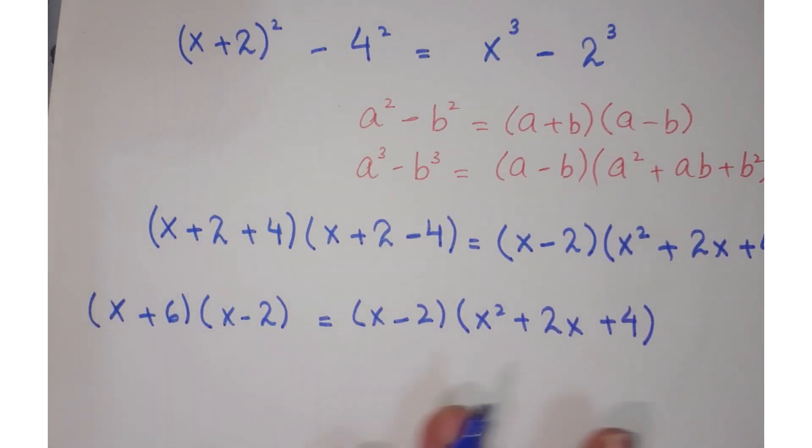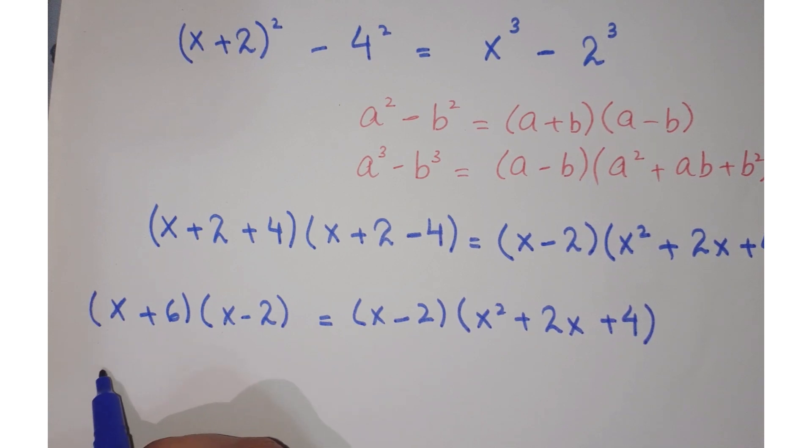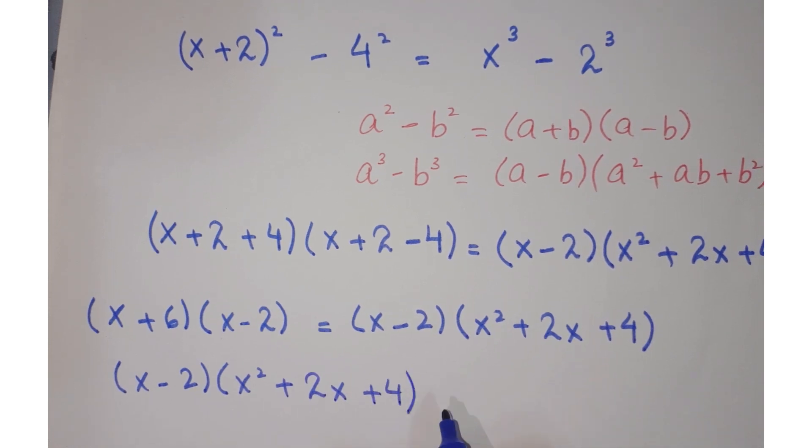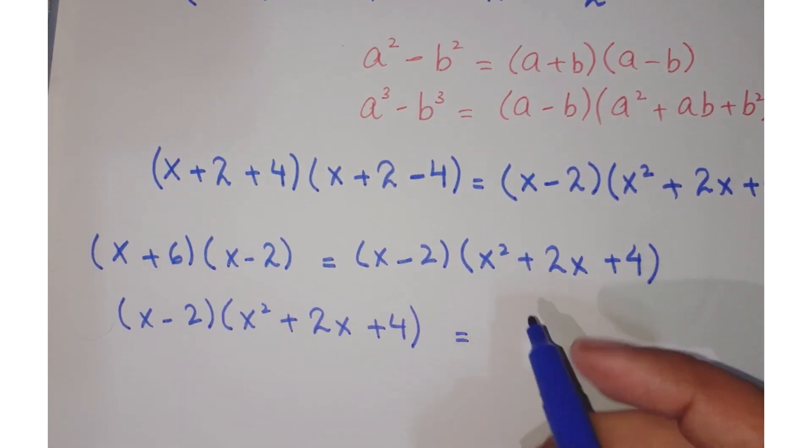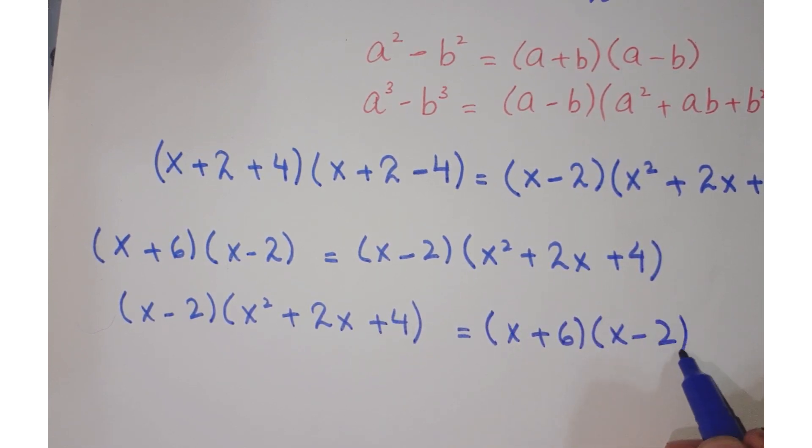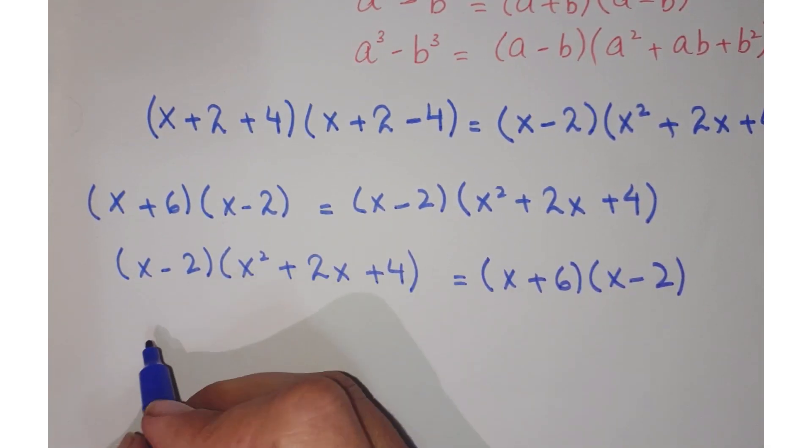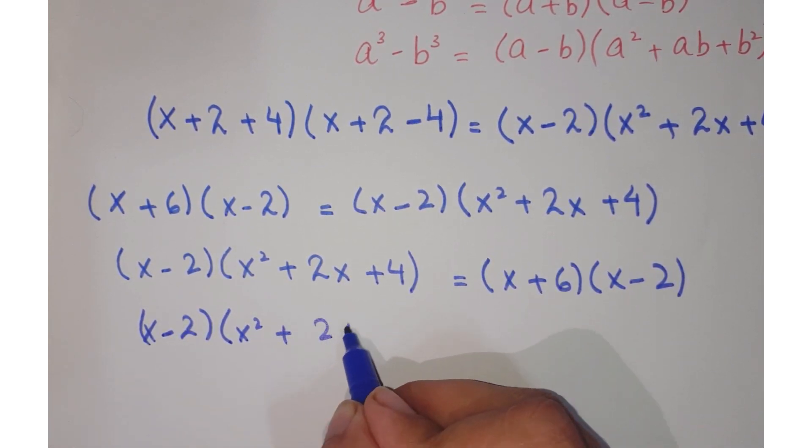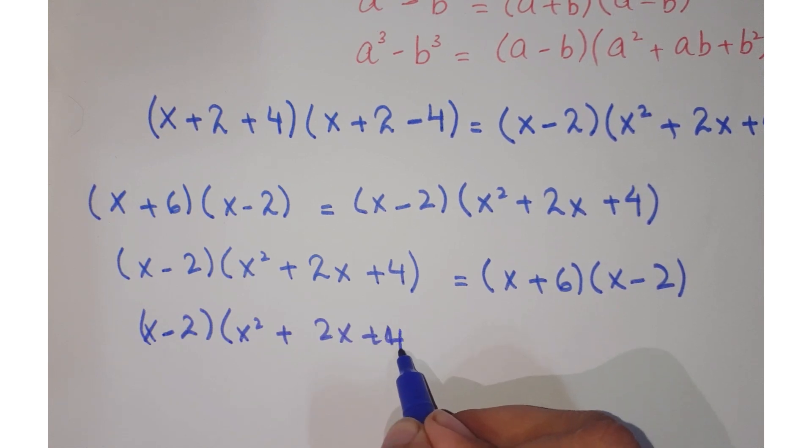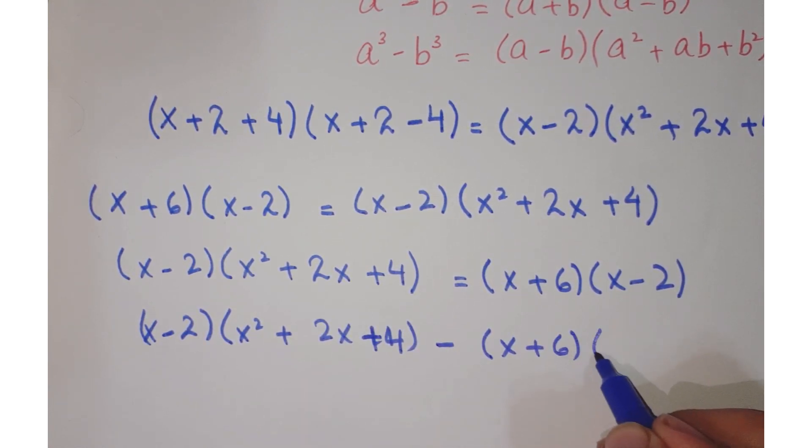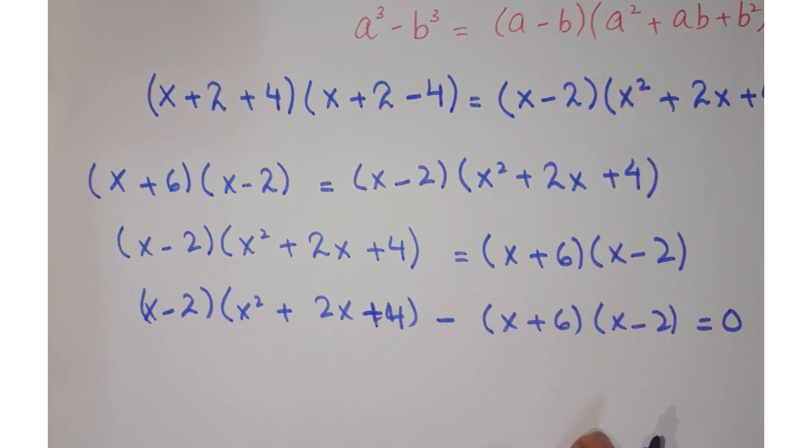Now just change the position, bringing this value on the right hand side. So you get (x-2)(x² + 2x + 4) and taking this on the left hand side.